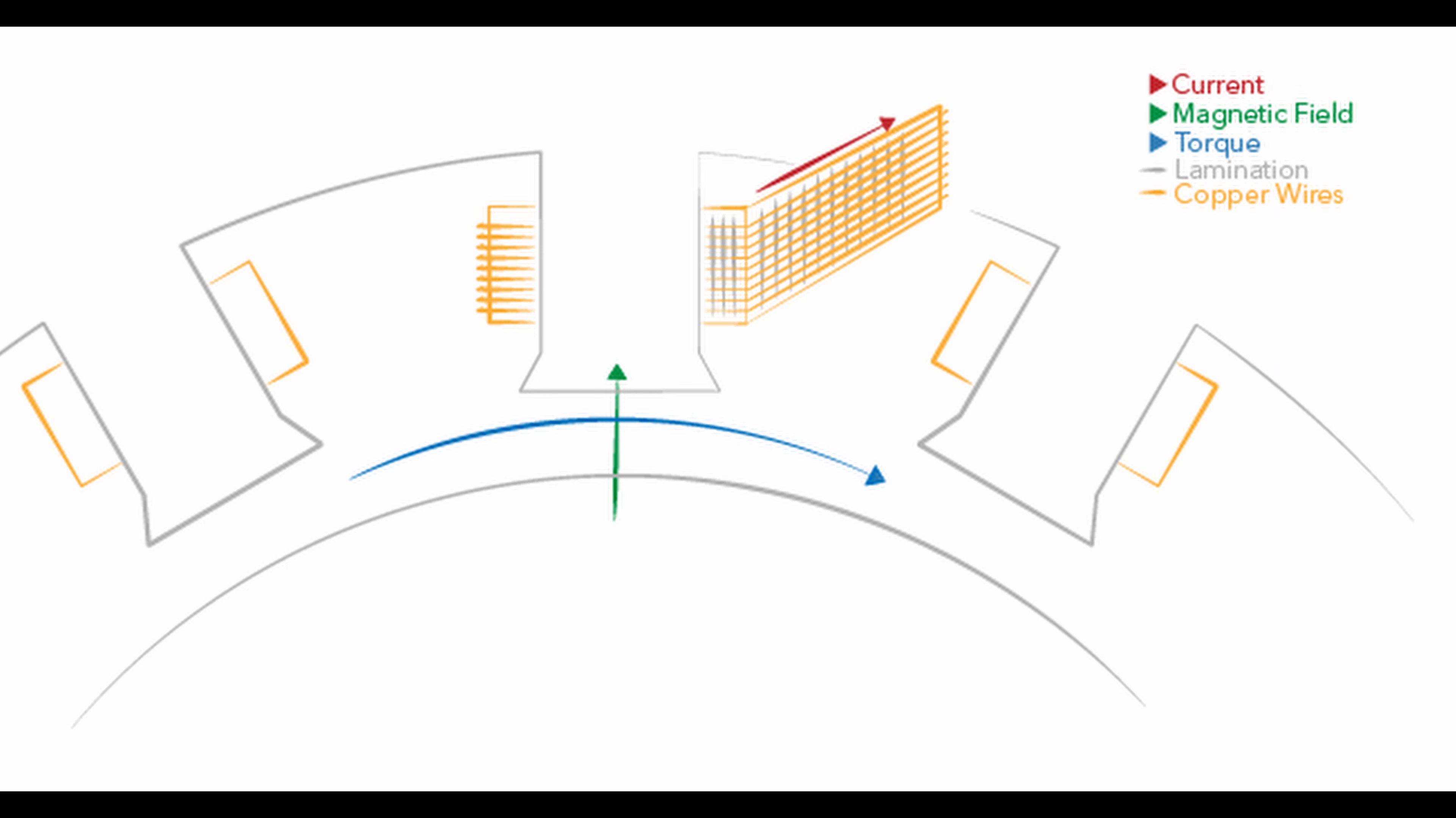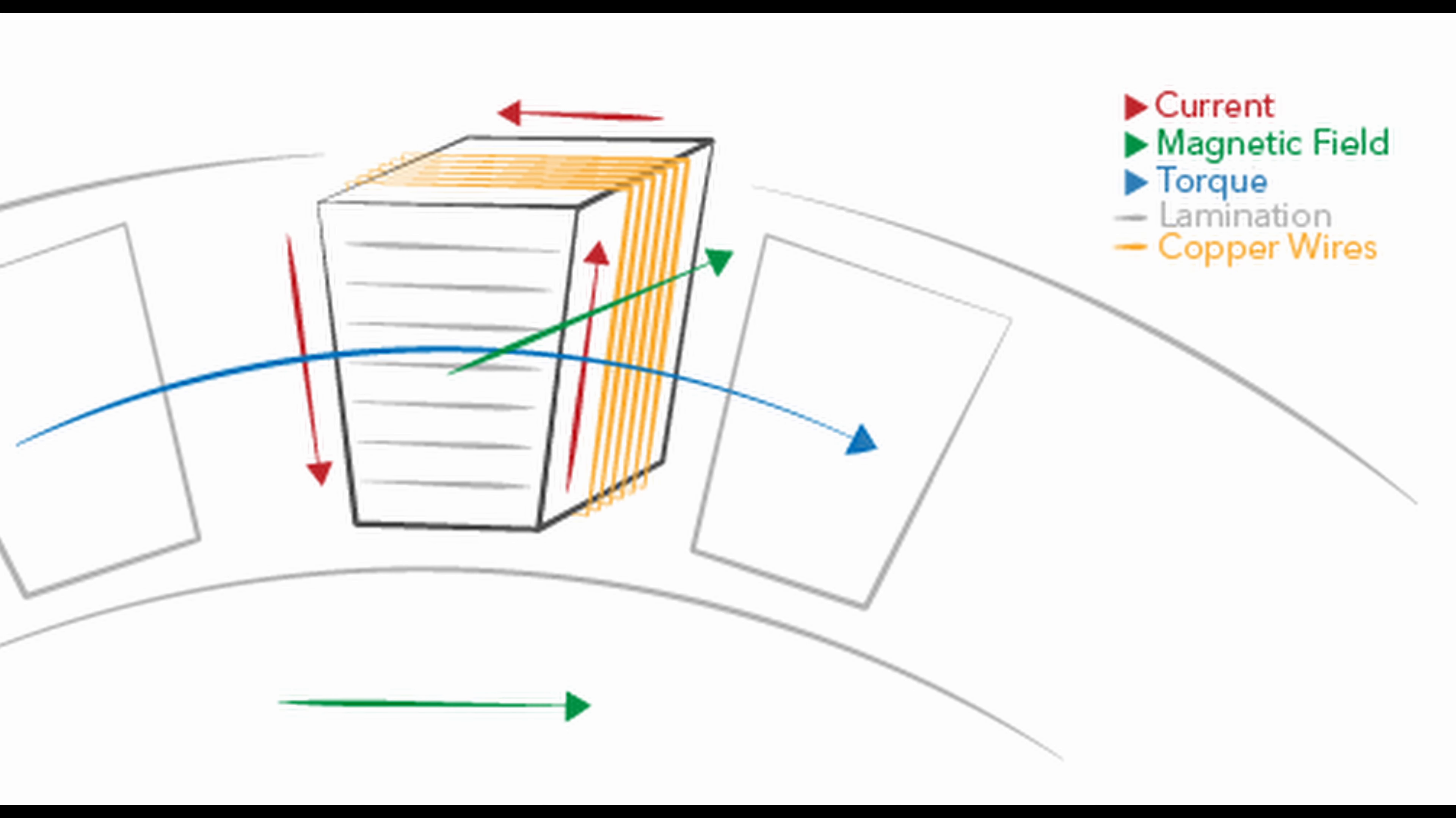In the radial flux machine, the air gap flux is radial and the conductors are axial, whereas in axial flux machine, the air gap is axial and the conductors are radial.